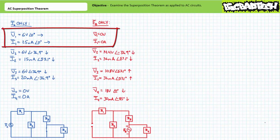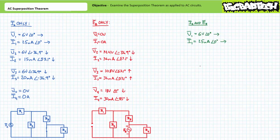Current source IA induces 25 milliamps at zero degrees through Z1 left to right, and voltage source EB induces no current through Z1. When these effects are superimposed, Z1 ultimately experiences 25 milliamps of current at zero degrees traveling left to right, and the voltage drop across Z1 is 6 volts at an angle of zero degrees.